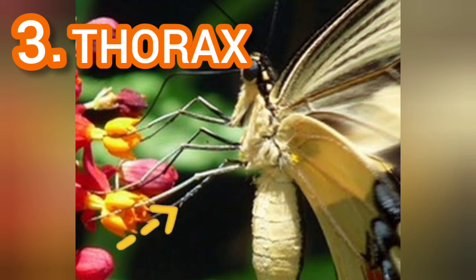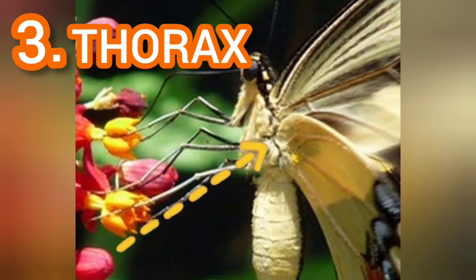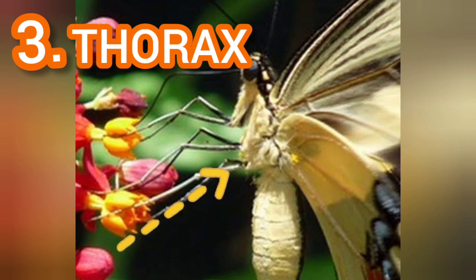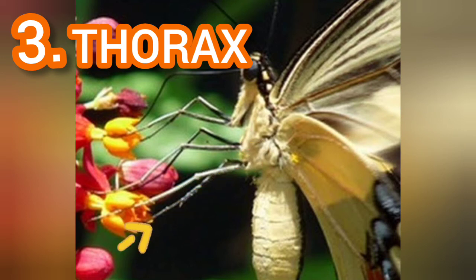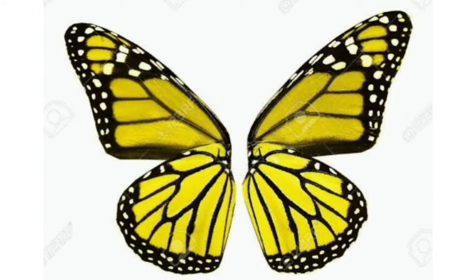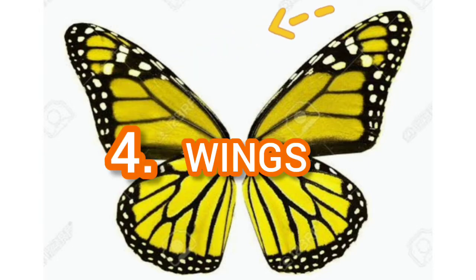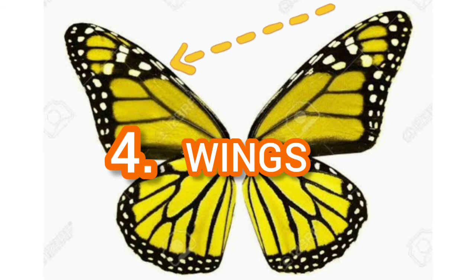The next body part is called thorax. Thorax is where the legs of the butterfly are located. Let's spell thorax: T-H-O-R-A-X. The fourth part of the butterfly is called wings — can you see where the arrow is pointing?